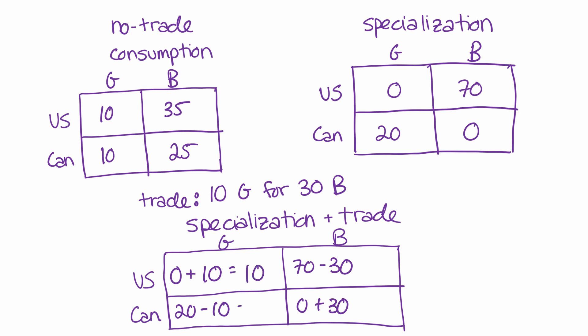And now our final numbers are 0 plus 10 is 10, 20 minus 10 is 10, 70 minus 30 is 40, and 0 plus 30 is 30.